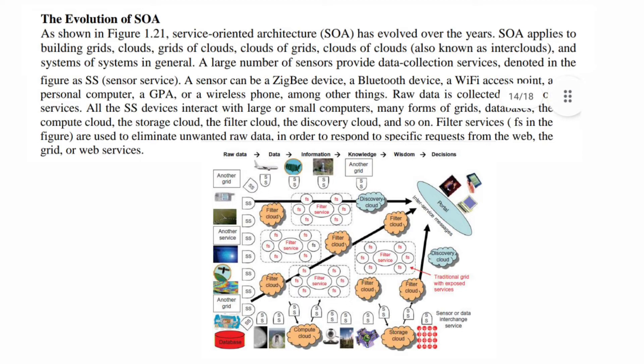Next is the evolution of SOA. As shown in the figure, Service-Oriented Architecture has evolved over the years. SOA applies to building grids, clouds, grids of clouds, clouds of grids, clouds of clouds, and systems of systems. In general, a large number of sensors provide data collection services, as denoted in the figure.